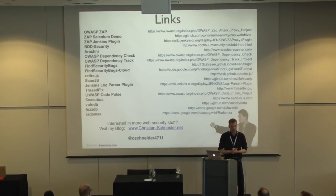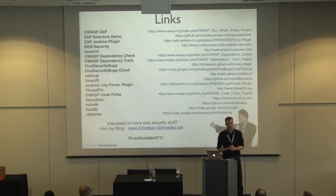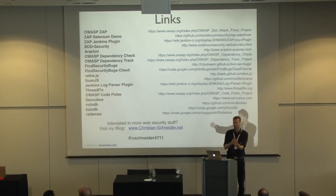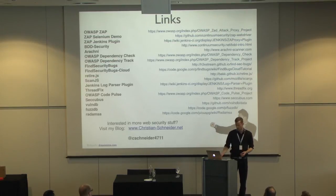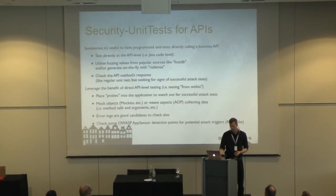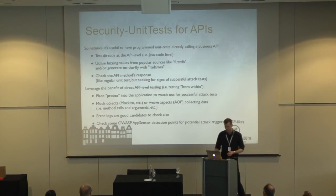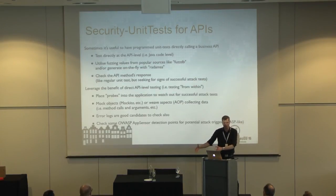Another question: do you do any fuzzing? Yes — in the maturity model there are also API security tests using existing JUnit tests to test the API at the direct call level, and for these you can do fuzzing to detect certain steps. You can do security unit tests and fuzzing using tools like Radamsa, which is a nice fuzzer, or values from FuzzDB — statically sourced, also very good — that you can throw at your API level and inspect the error logs.